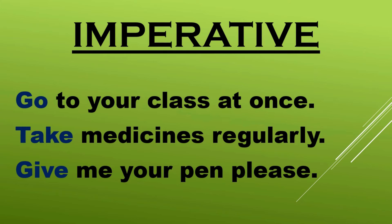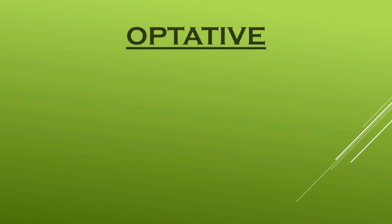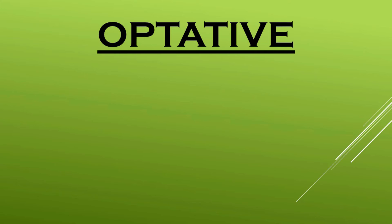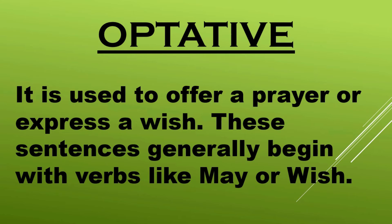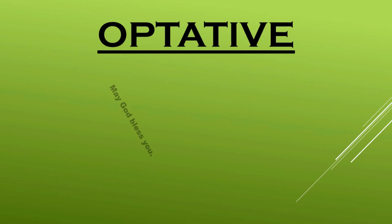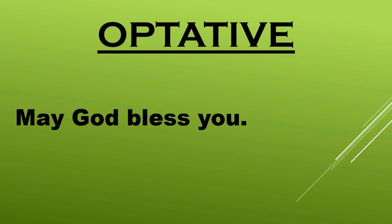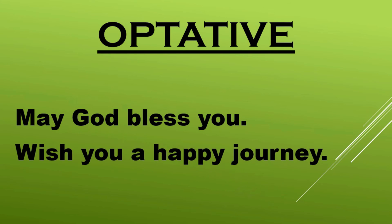The fourth kind of sentence is known as an optative sentence. It is used to offer a prayer or express a wish. These sentences generally begin with verbs like 'may' or 'wish.' For example: 'May God bless you' and 'Wish you a happy journey.' In this way, we construct optative sentences.